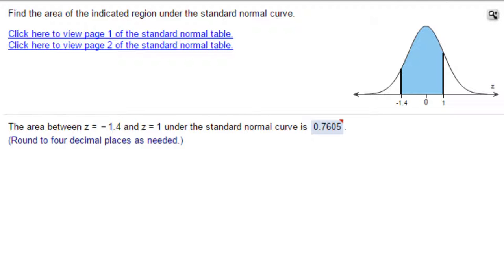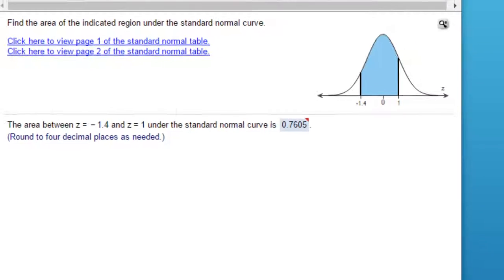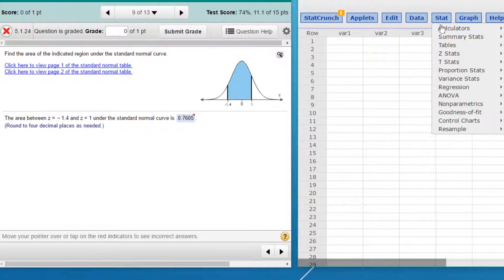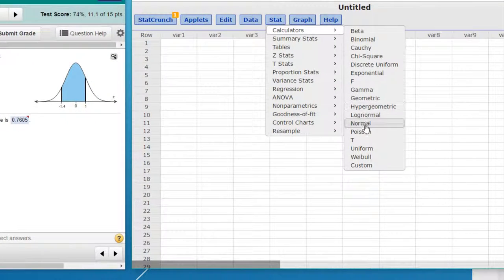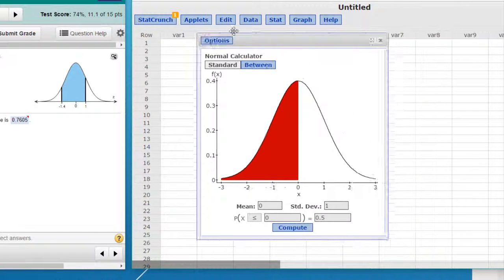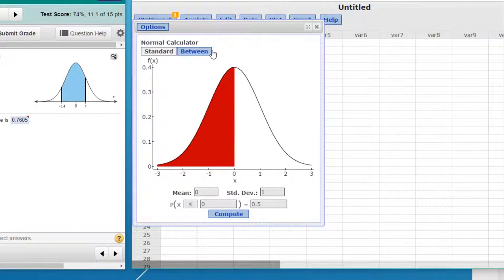We're going to bring up StatCrunch here, and we just go to Stat, Calculators, Normal, bring up our little dialog box.